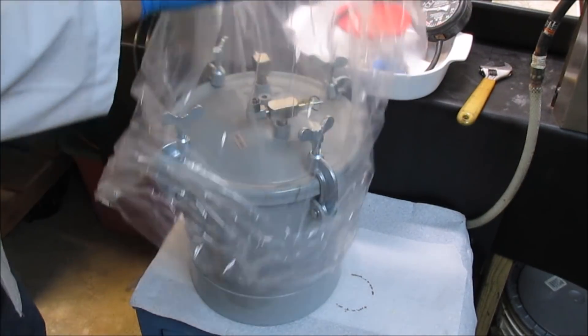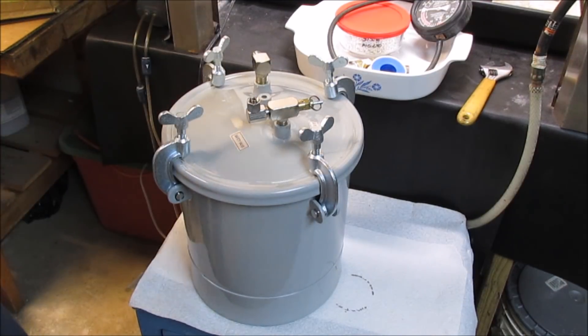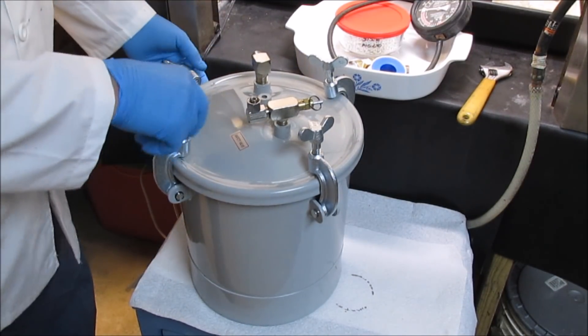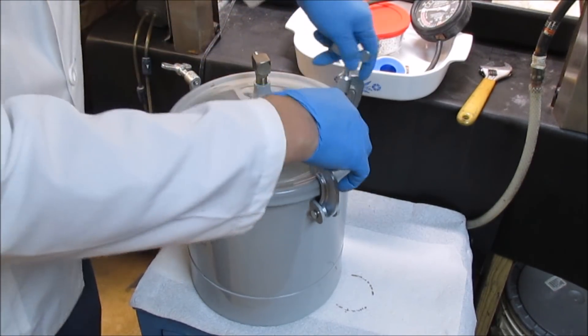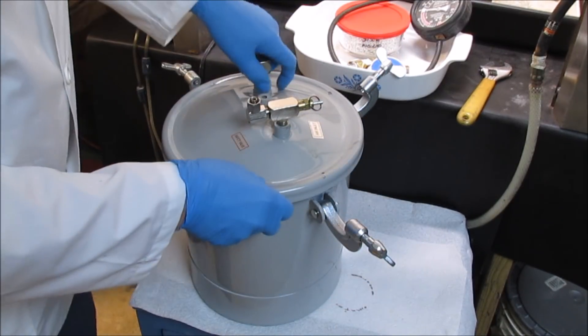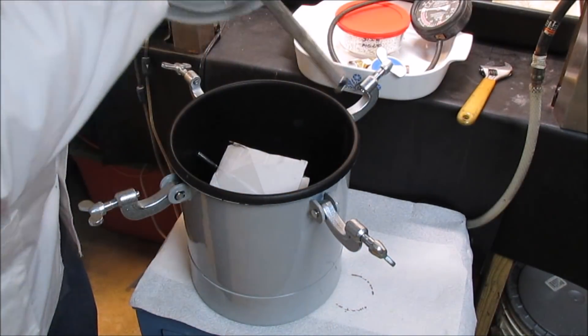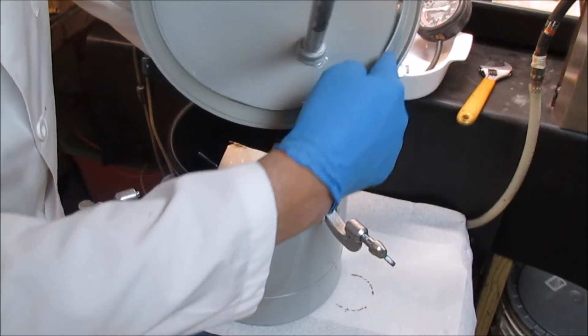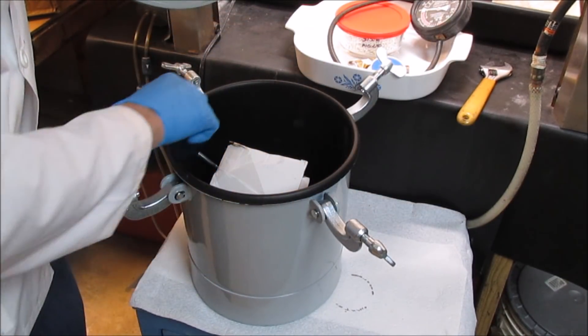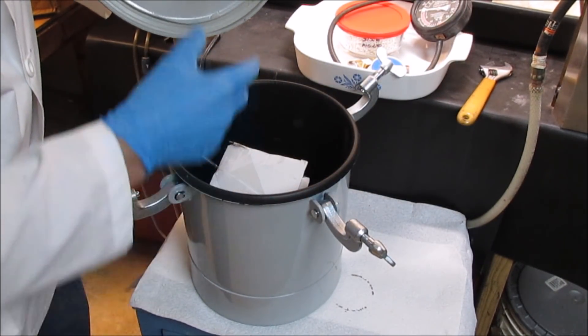Alright, what we have here is the pressurized paint pot. It's got some clamping devices here. They clamp the lid in place. Inside here we've got a rubber gasket that creates a seal with this inner portion of the tank here.